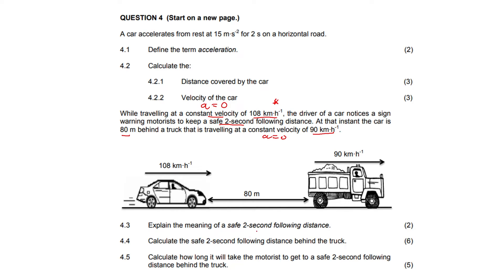4.3: Explain the meaning of a safe two-second following distance. You can put it in your own words, but essentially: when following another vehicle, the motorist should keep a safe distance such that it takes more than two seconds to reach the same position as the truck in front. Essentially, the car will need two seconds to stop in an emergency and not hit the vehicle in front of it.